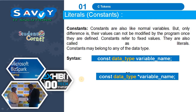Literals are also called constants. Constants are like normal variables, but the only difference is their values cannot be modified by the program once they are defined. Constants refer to fixed values and are also called literals. Constants may belong to any of the data types.